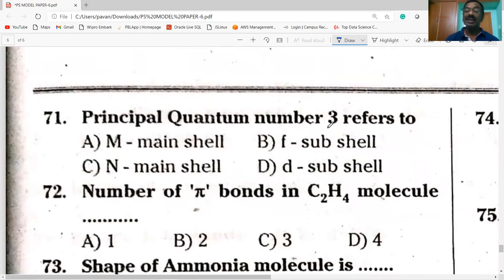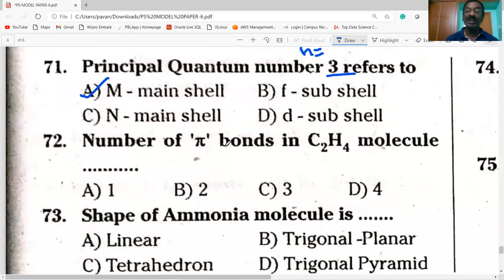Principal quantum number N equals 3. K, L, M shells: first shell is K, second is L, third is M. So it refers to M shell. The number of sigma bonds with double or triple bond, that is multiple bonds. In C2H4, there is one double bond which contains one sigma bond, so total 5 sigma bonds. Option A is correct.